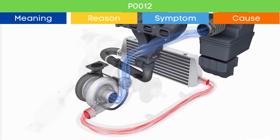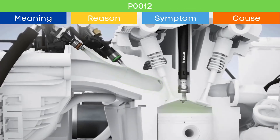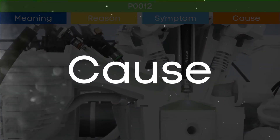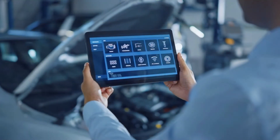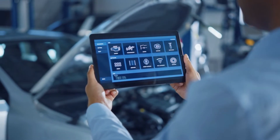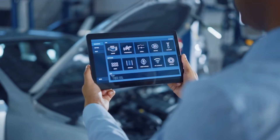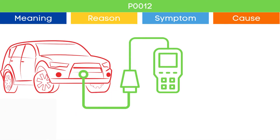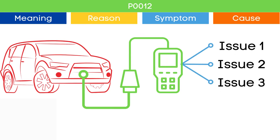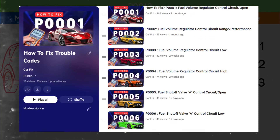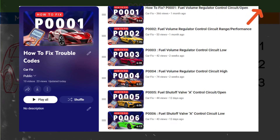Now that we understand the symptoms of P0012, let's delve into the causes. The P0012 code may be triggered due to several causes. To ensure the root cause, check other activated OBD-II codes, as they may indicate malfunctions in other engine management system components. You can find our playlist on the meaning and causes of each OBD-II code — the link is in the corner.